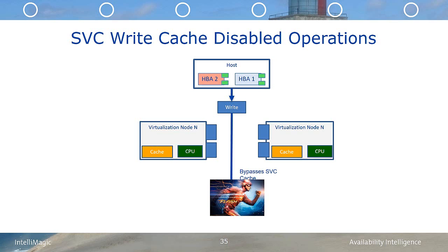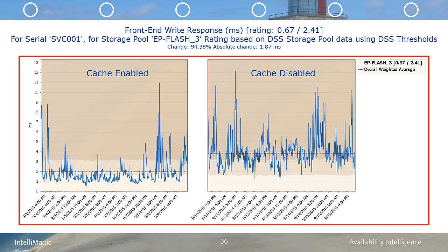It has been suggested that in order to maximize throughput for large sequential operations on SVC volumes residing entirely on IBM flash systems, you should consider disabling the write cache. During this use case, we're going to look at whether or not this is true for the workload that we examined.